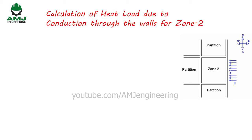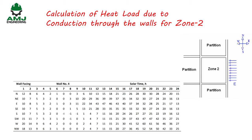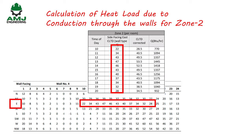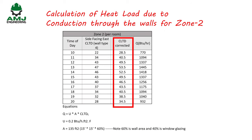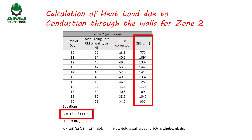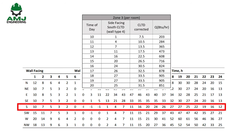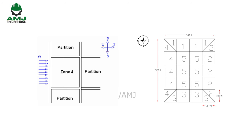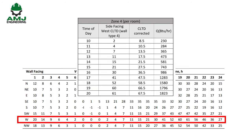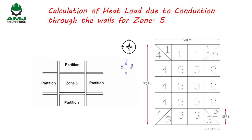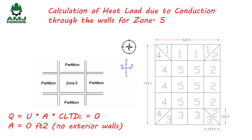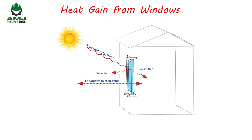For Zone 2, external walls face east, so east-facing CLTD values from wall type 4 are used. The same procedure applies for Zones 3 and 4, using south and west-facing CLTD values respectively. Zone 5 is an internal zone with no solar exposure, so the heat load due to conduction through walls is zero.